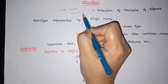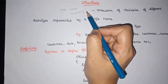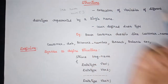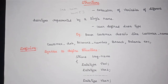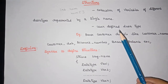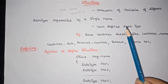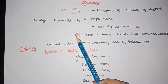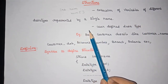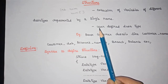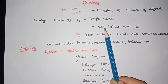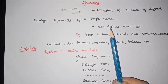An array is used to hold a group of data items, and those data items should be of the same data type. There are cases where we need to store a collection of data items but those data items are of different data types. In that case, we can go for this concept called structure.